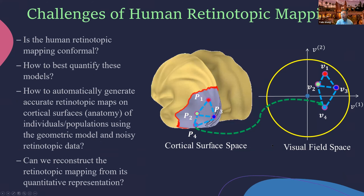However, some questions remain even with the newly proposed PRF model. Since we know the mapping on the animal model is conformal — validated on monkey and fish visual areas — the natural question is: is the human retinotopic mapping conformal? Also, past research only analyzed groups of about five people to identify different visual areas. It turns out humans have up to 12 visual areas, but how can we integrate them with some measurement model or numerical measurements?